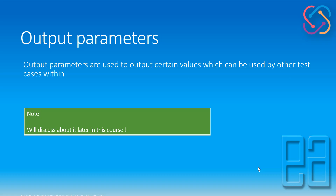There is another kind of parameter type in Test Project which is output parameters. Output parameters, as the name suggests, are used to output certain values from a particular test case to other test cases. We can use the values from one test case to another test case as an input, so that we can chain the test cases to run the test in a sequential order or the order that you like.